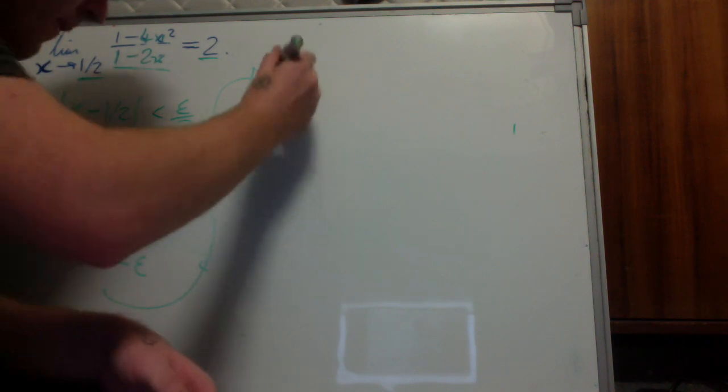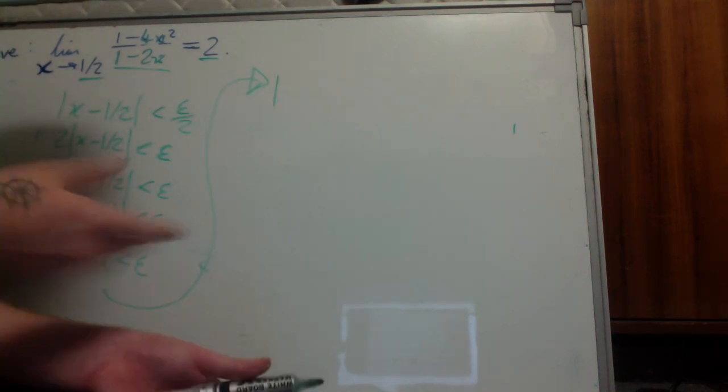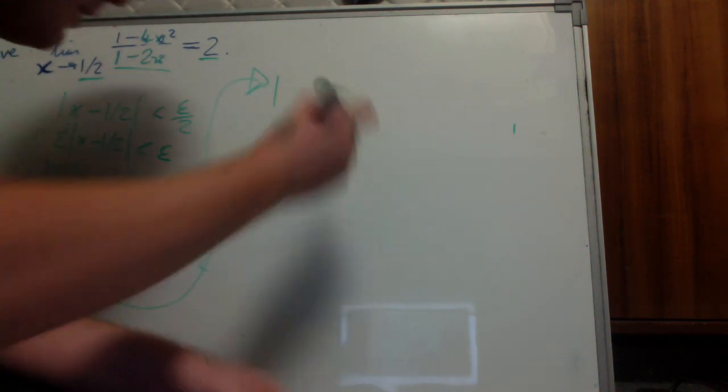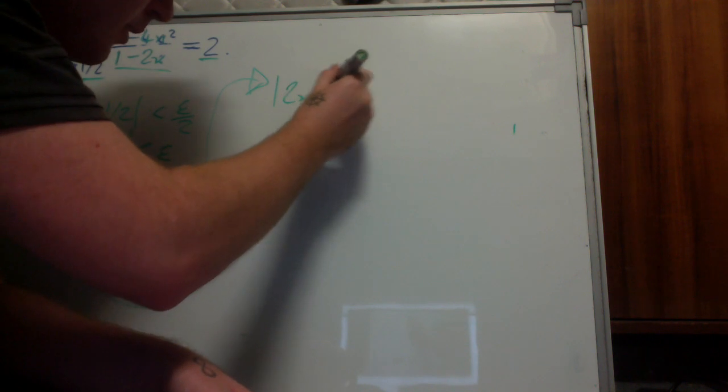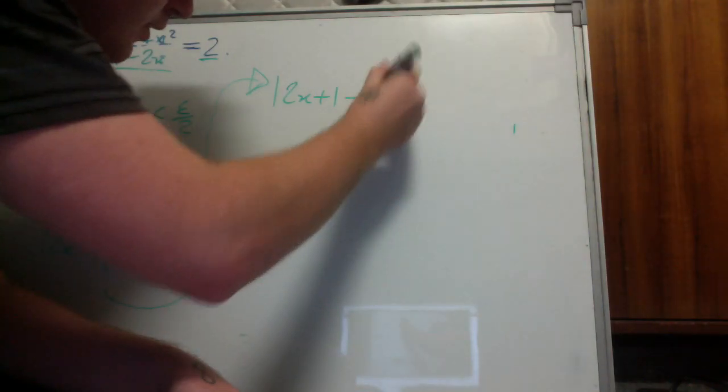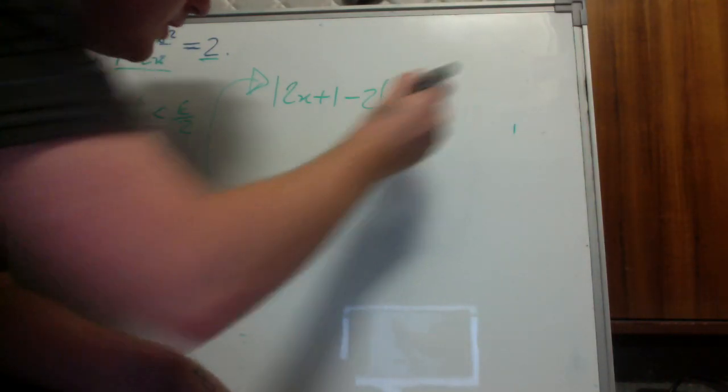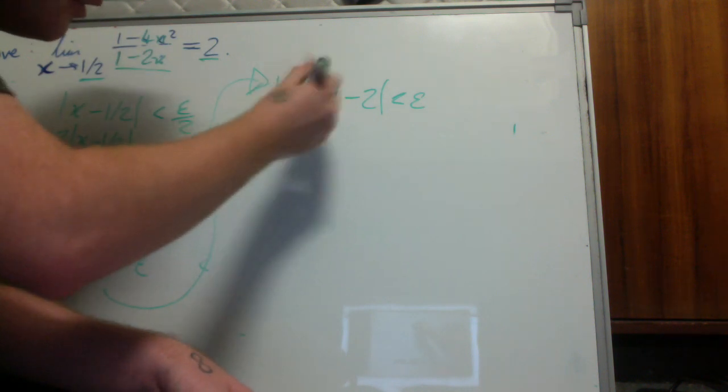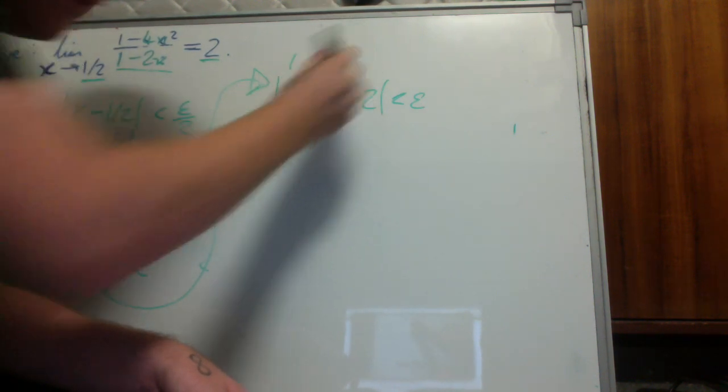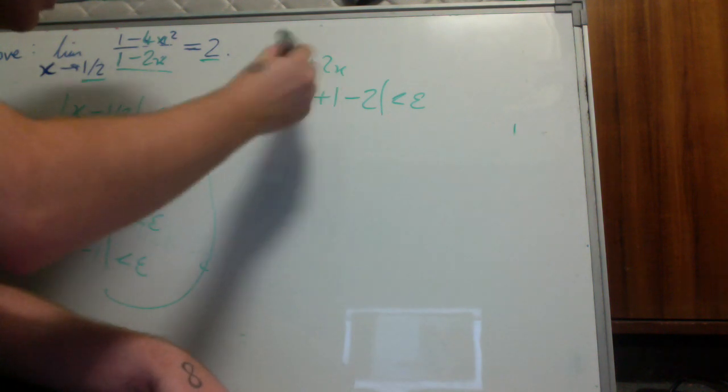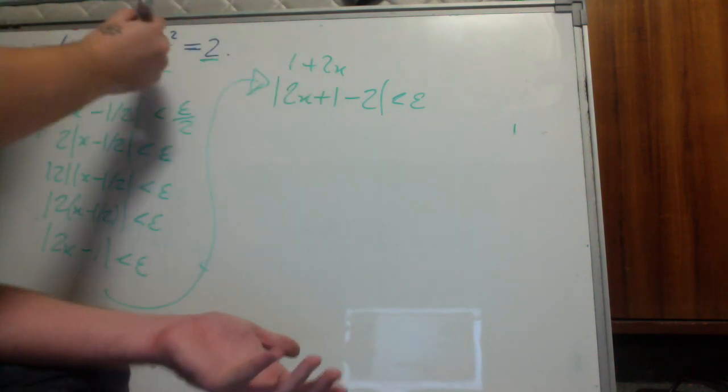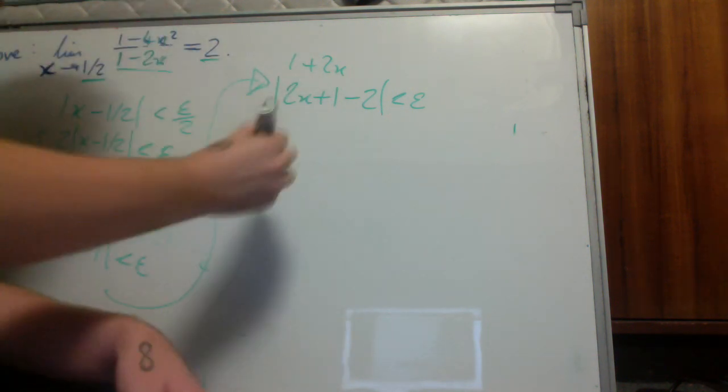Oh yeah, obviously, sorry. Getting late. We want to subtract one and add one: |2x + 1 - 2| < epsilon. Now we can, this is equal to that, so we can put it back together into this function.